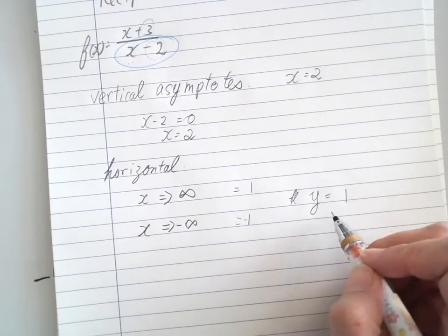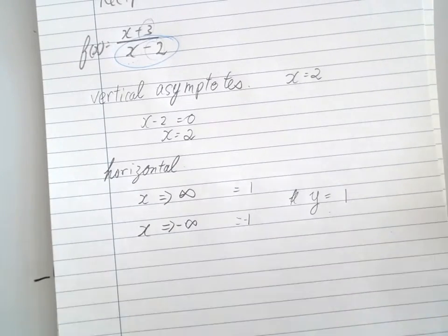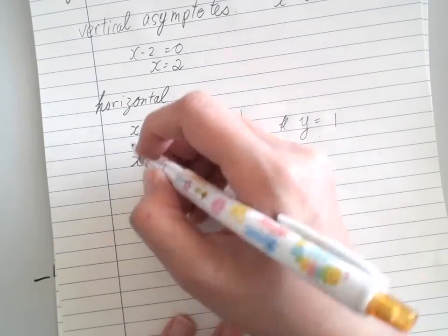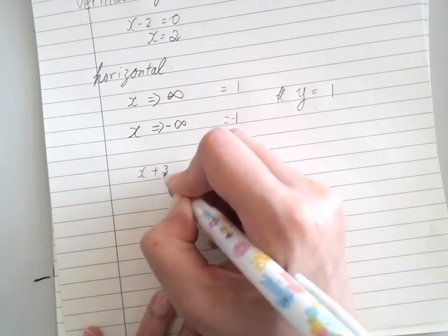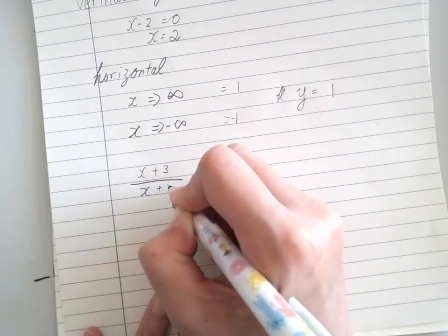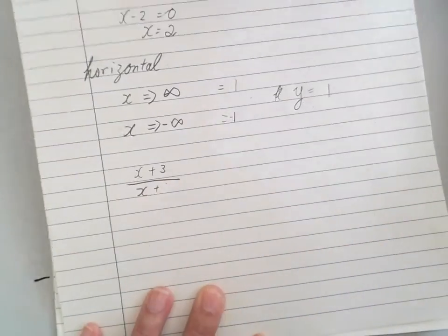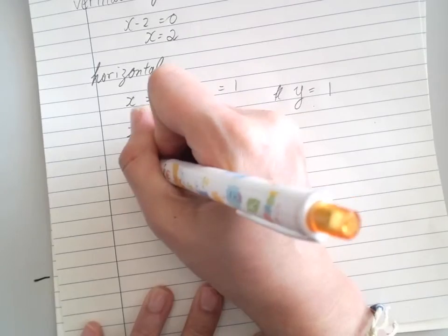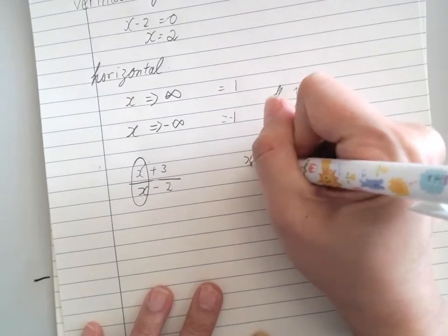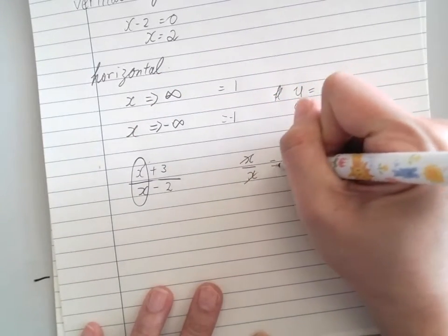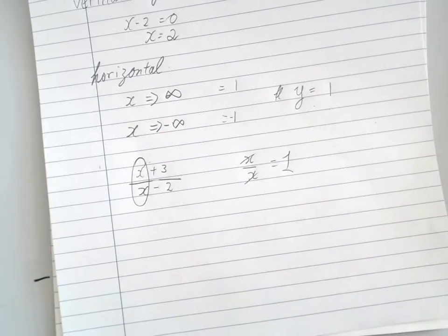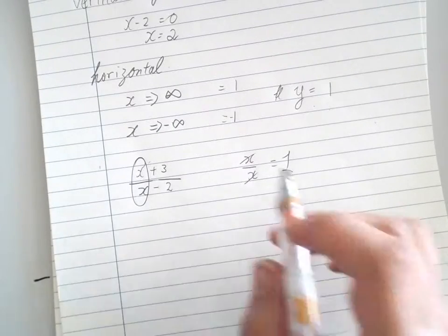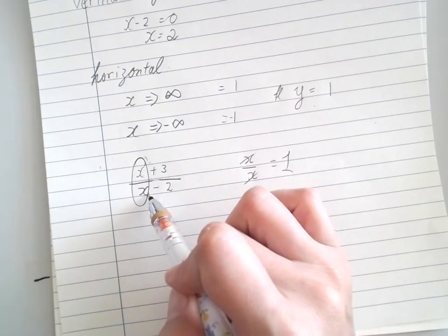There's another trick: you arrange the denominator and numerator by the power of degree of x. Then we take the leading coefficients, cancel them out, and it equals 1. So the horizontal asymptote is 1. That only happens when you have a number like this.